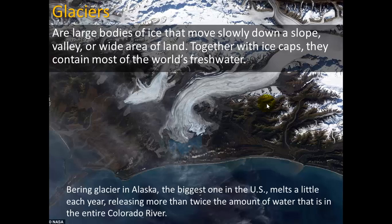Glaciers are large bodies of ice that move slowly down a slope, valley, or wide area of land, and together with ice caps they contain most of the world's fresh water. This is Bering Glacier in Alaska, the biggest one in the U.S. It melts a little each year, releasing more than twice the amount of water that is in the entire Colorado River.